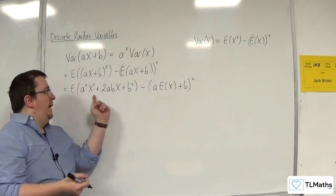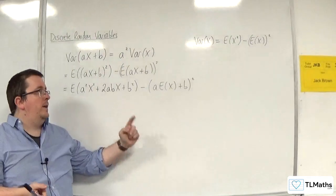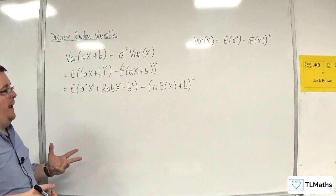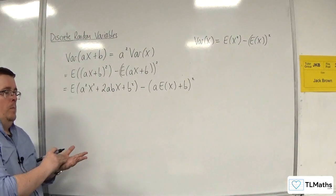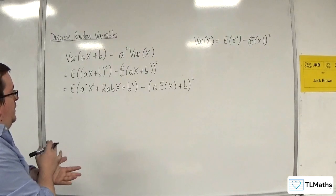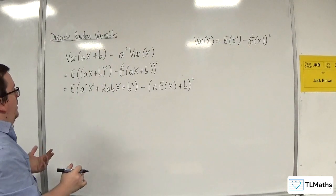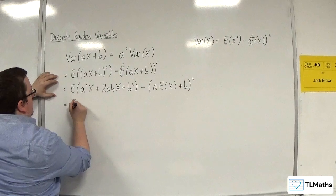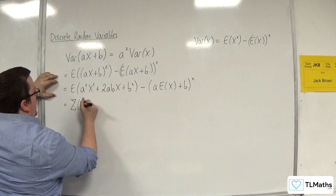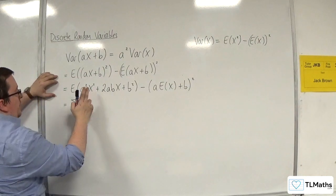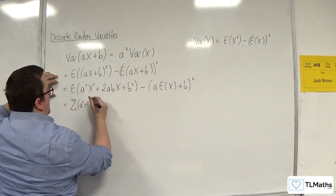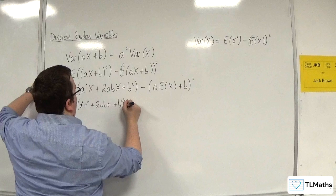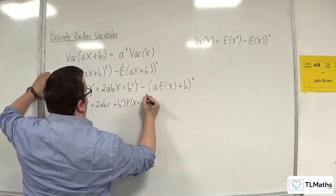Now expanding that out, I could write that in sigma notation if you prefer. So what we would have here is the sum of a squared times r squared plus 2abr plus b squared times each of the probabilities.